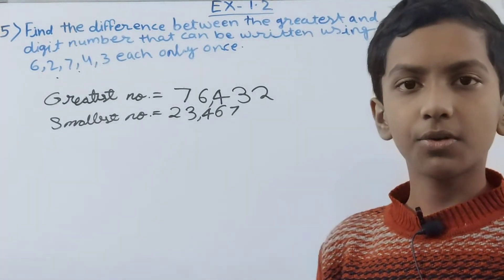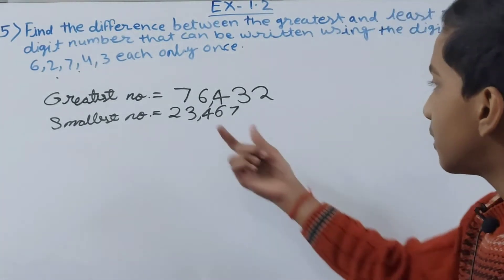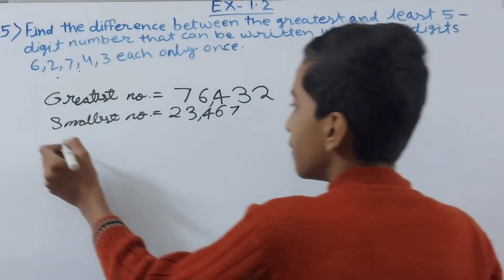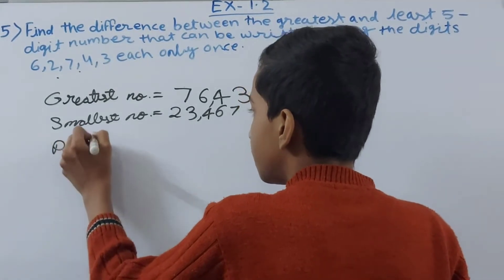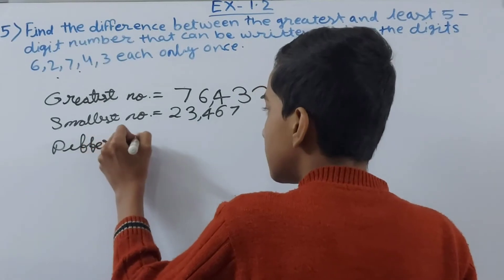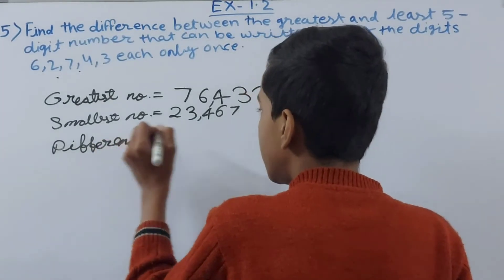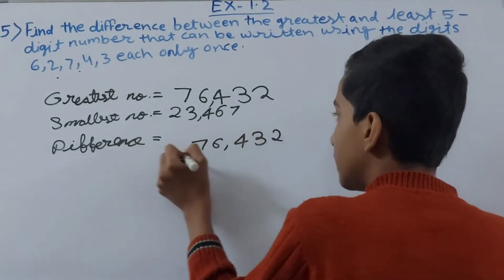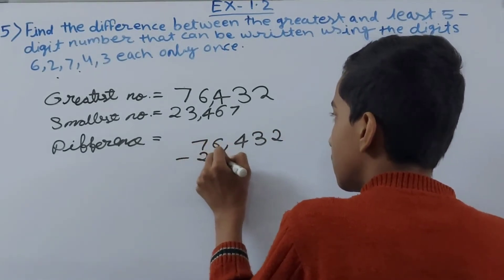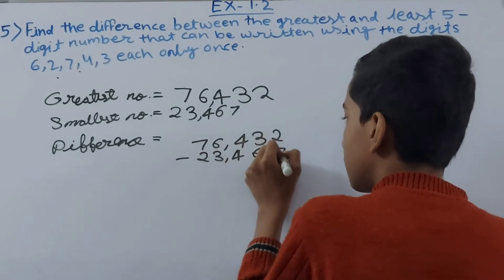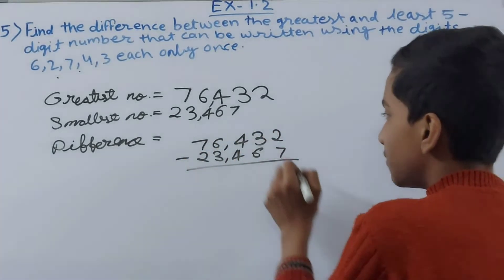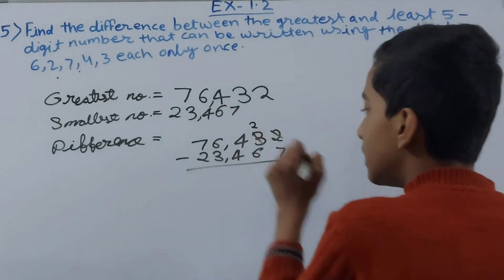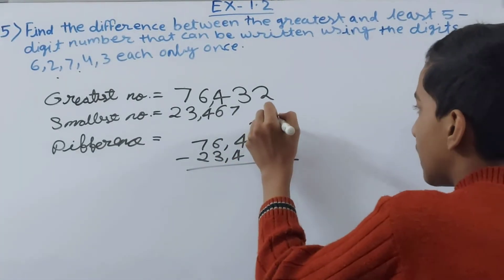Now we are having greatest number 76432 and smallest number 23467. Now simply we will find their difference. Difference means subtraction, so keep this in mind. So we have 76432 minus 23467. 2 minus 7, not possible. We'll take 1 from this 3, 3 will turn to 2, this 2 will become 12. So we will be having 12 minus 7 equals 5.